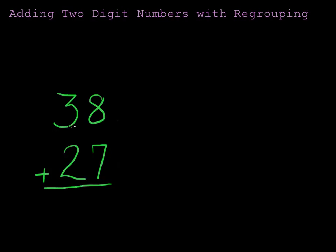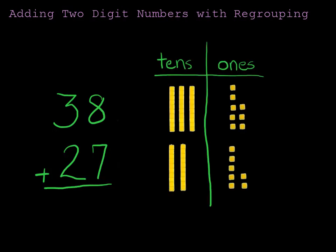Let's say we have the problem 38 plus 27. Well, those are some pretty big numbers. So, the first thing that I'm going to do to help us add is to draw this picture, draw these numbers with tens and ones. So, you can see I have all my tens in one column and all my ones in the other column.